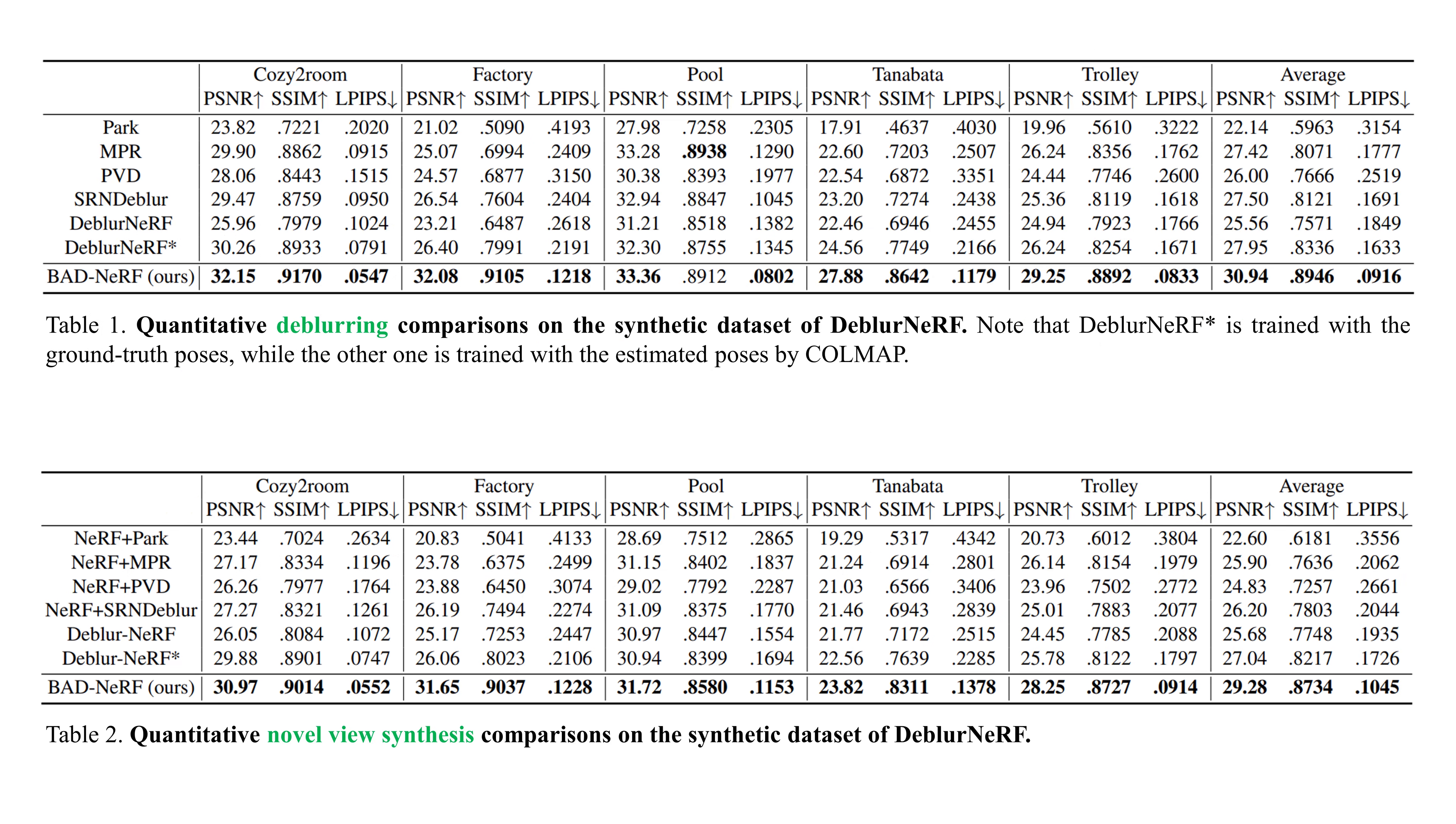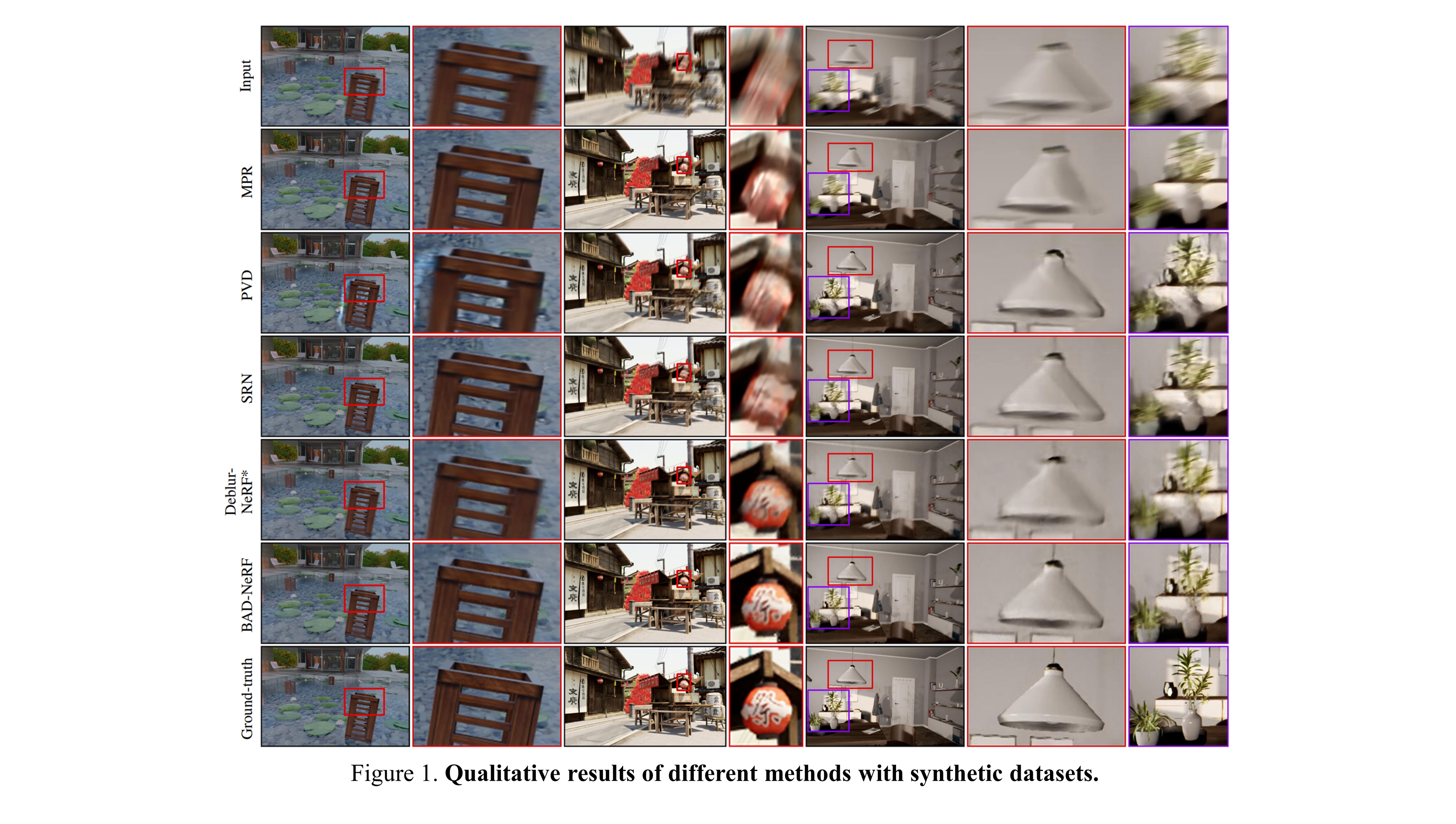Table 1 and Table 2 are respectively the quantitative deblurring and novel view synthesis comparisons on the synthetic datasets of Deblur-NeRF. The experimental results demonstrate that our method achieves the best performance over prior methods. It also demonstrates that Deblur-NeRF is sensitive to the accuracy of the provided camera poses. Our BAD-NeRF achieves the best performance under inaccurate poses on various scenes and different levels of blur.